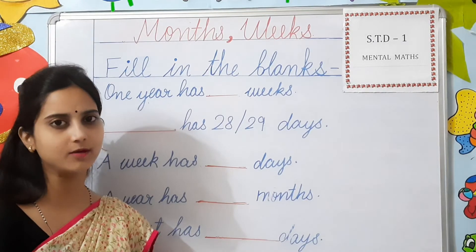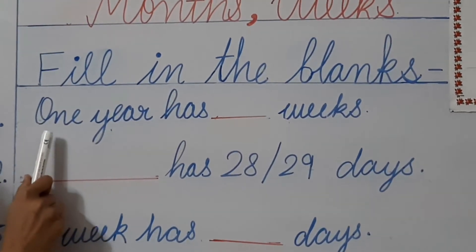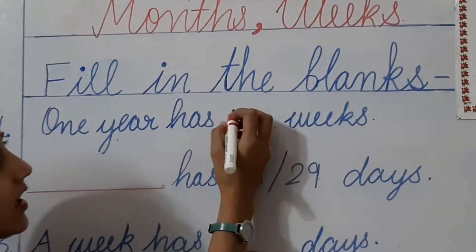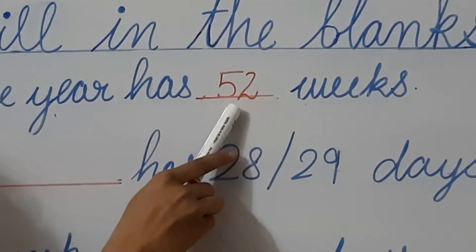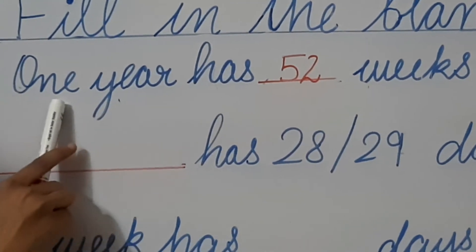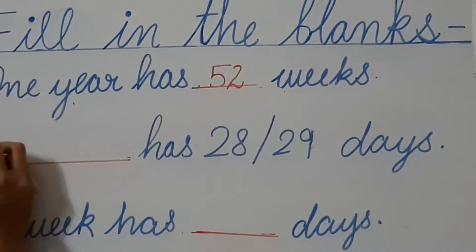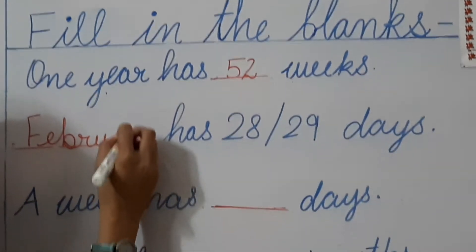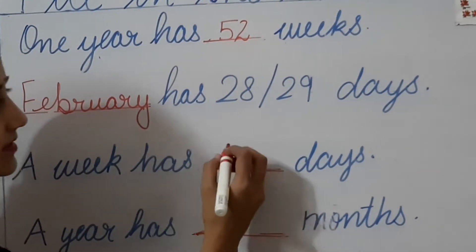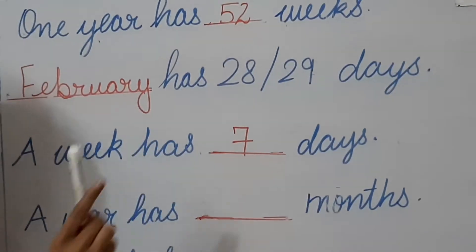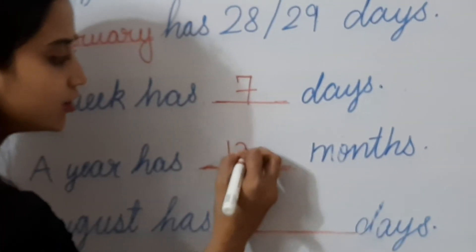Now our next topic is Months and Weekdays. Look here, children. Question number 1: one year has dash weeks — one year has 52 weeks. If you count, you will get 52 weeks in one year. Next question: dash has 28 or 29 days — the month of February has 28 or 29 days. Next: a week has dash days — one week has 7 days. Next: a year has dash months — one year has 12 months.